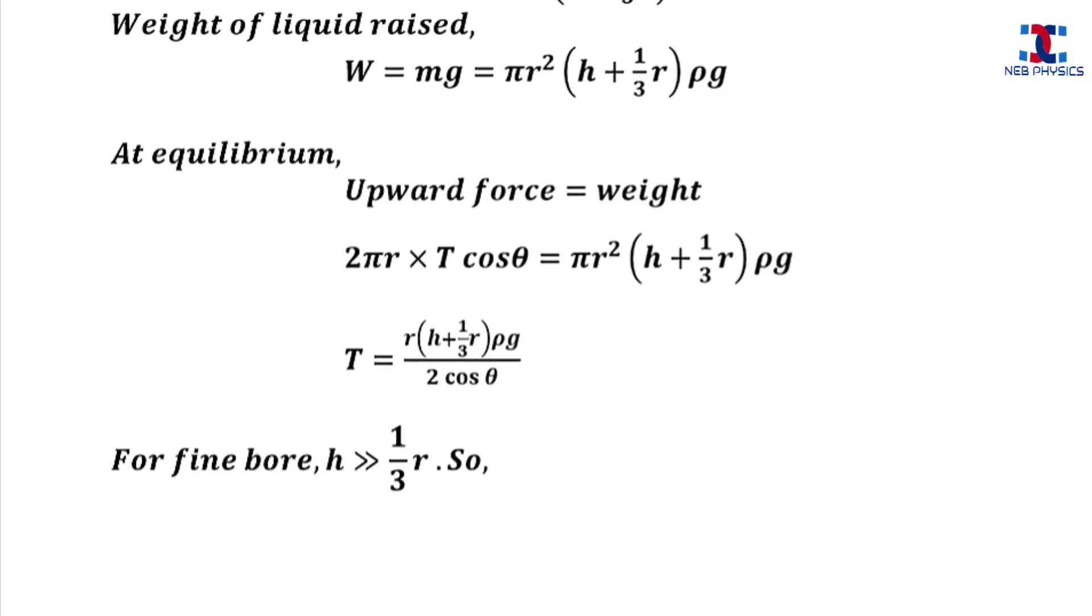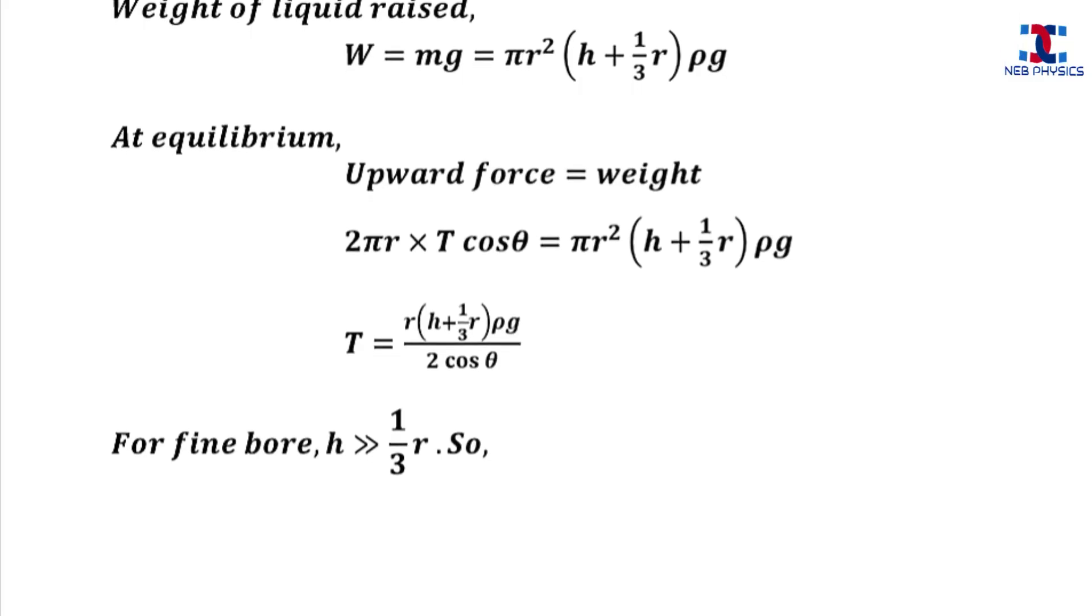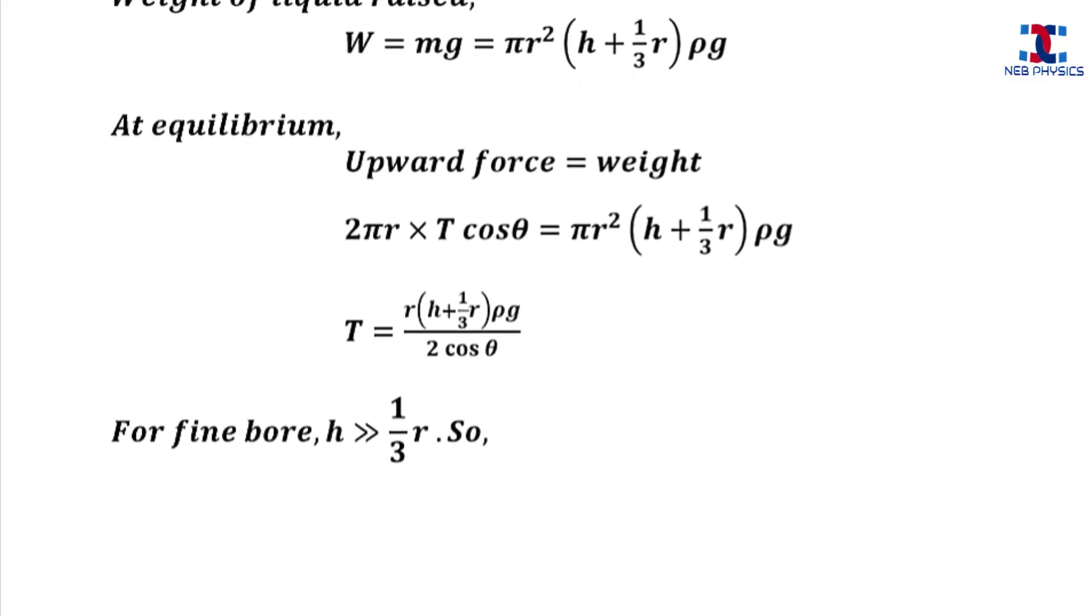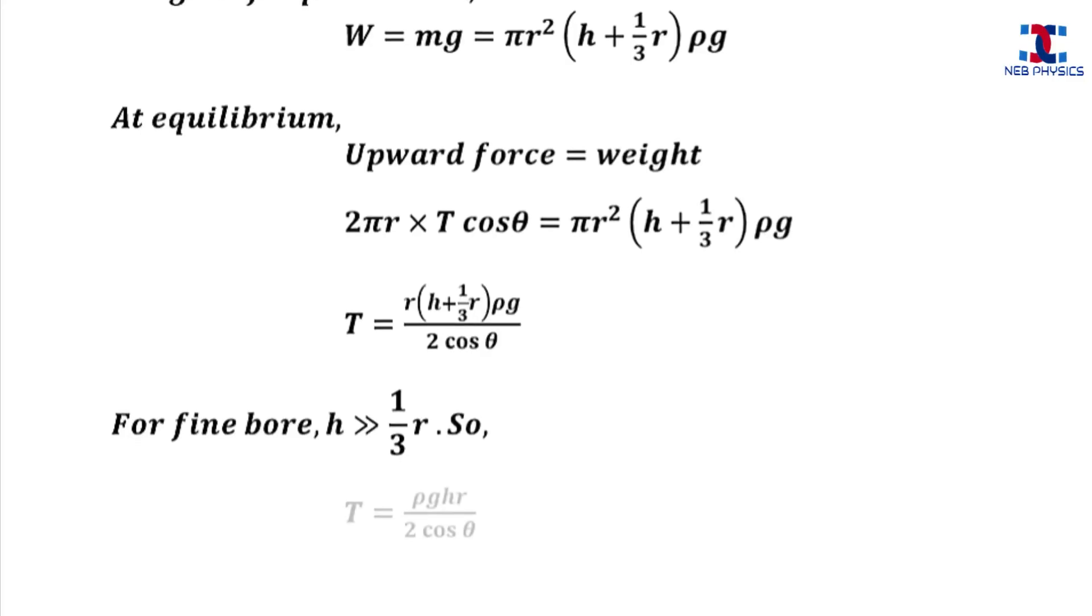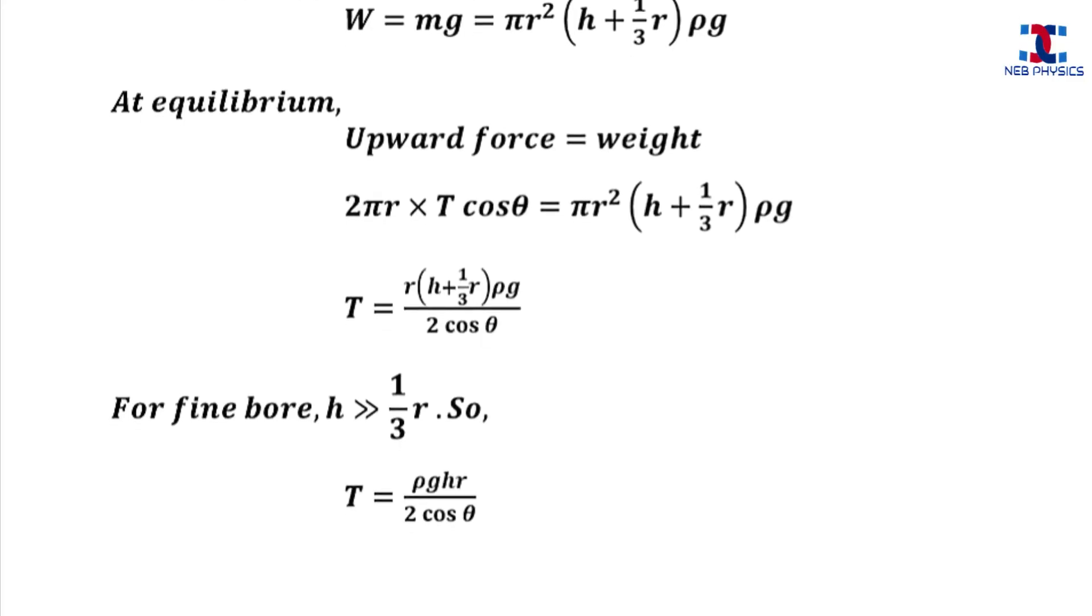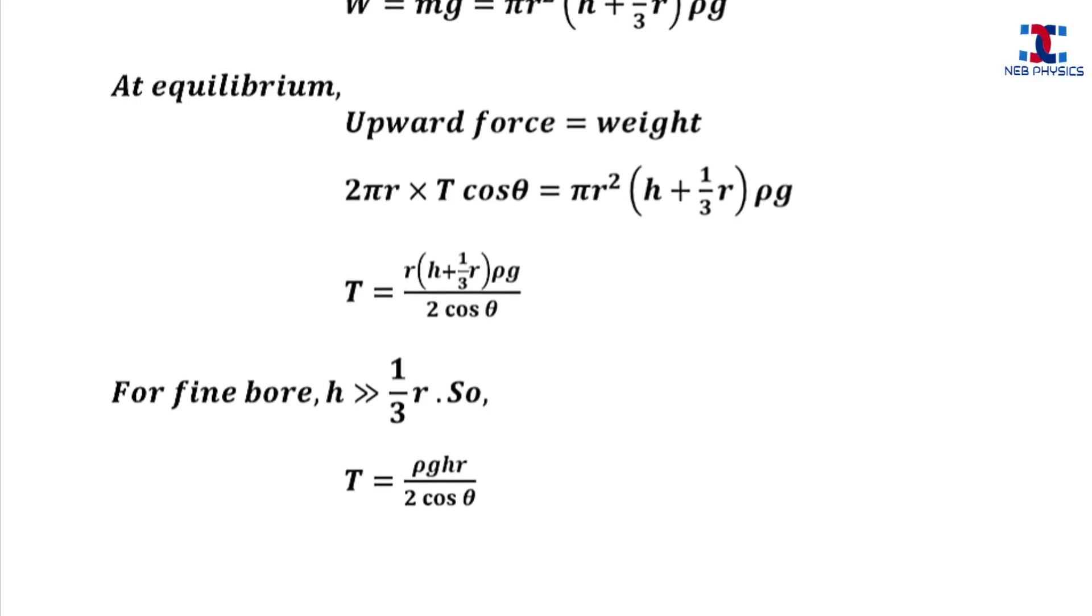Now for a capillary tube with a very small diameter, the height of liquid rise is much greater than 1/3 r. So 1/3 r can be neglected compared to h. So neglecting 1/3 r, we get the expression for surface tension as below.